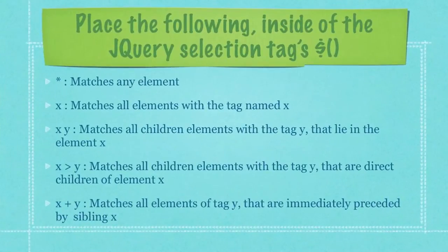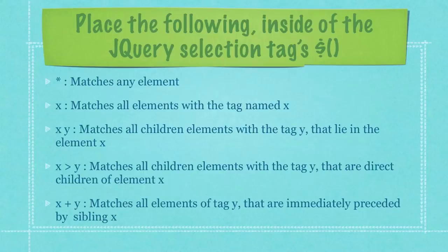I just want to make sure you understand that you would place these following codes inside of the jQuery selector. Think of the letters I'm going to describe not as letters, but as tags that you are going to be searching for. If you simply put a tag in here represented by the letter X, it will match all elements with the tag named X.